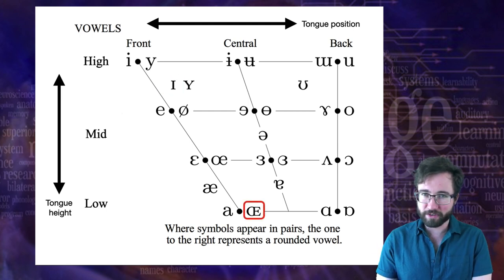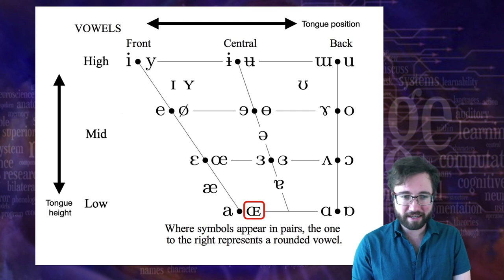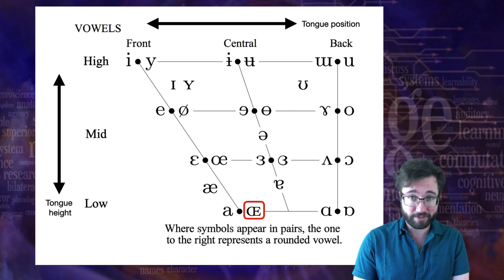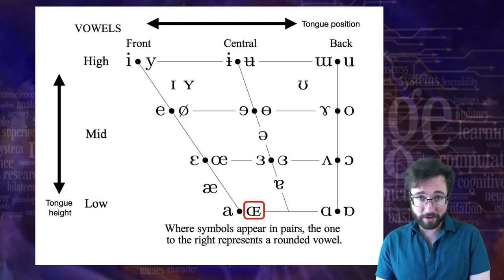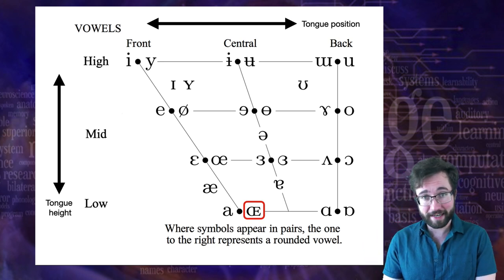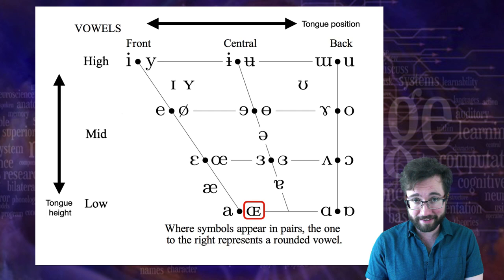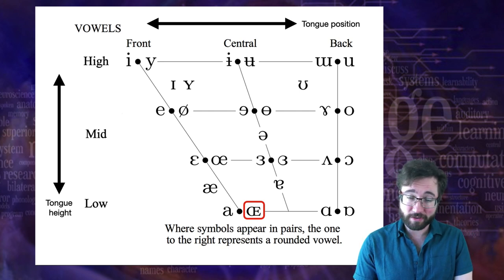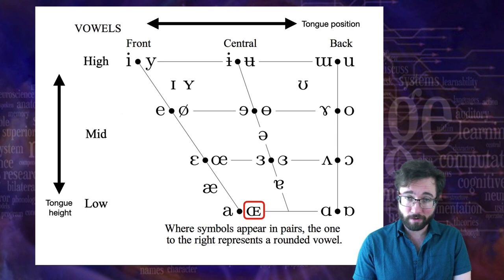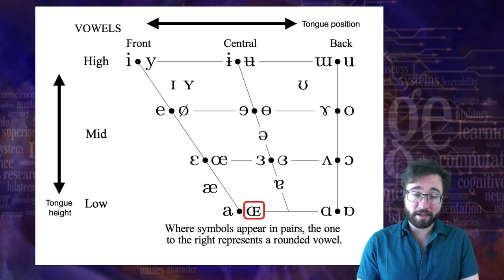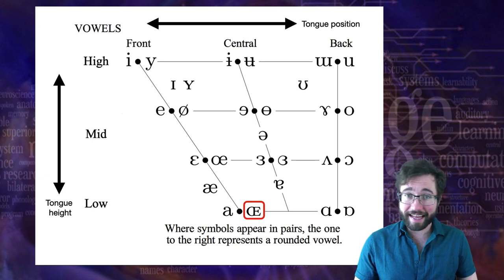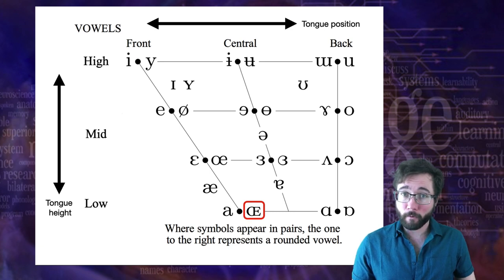How about this one? This one's a little weird. We don't have this in English and it's actually a pretty rare sound across languages. Is it rounded or unrounded? It's on the right, so it's rounded. It's low and front — a rounded low front vowel. If you want to pronounce this, start with the unrounded low front vowel and then round it.